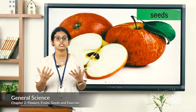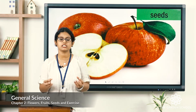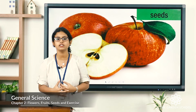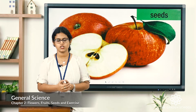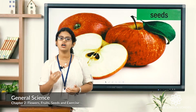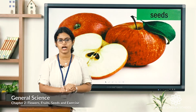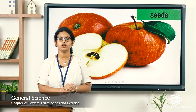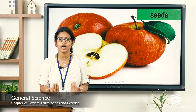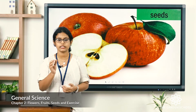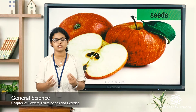Now let's see about seeds. Seeds are inside a fruit — seeds hide inside a fruit. Seeds grow into a new plant. Each seed has a baby plant. When this baby plant gets air, water and soil, it starts growing into a plant. Most plants grow from a seed, and the fruit protects the seed.